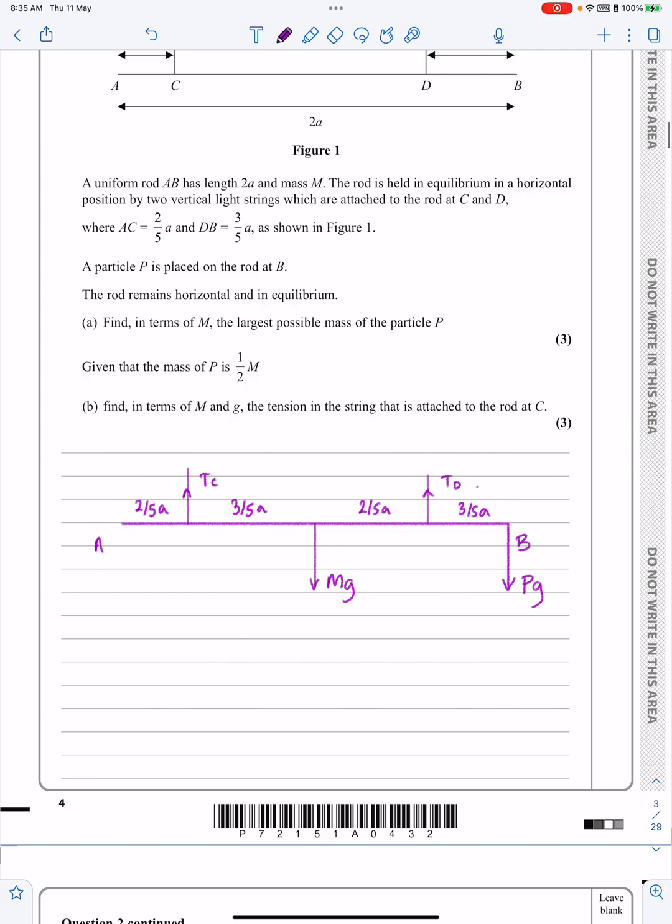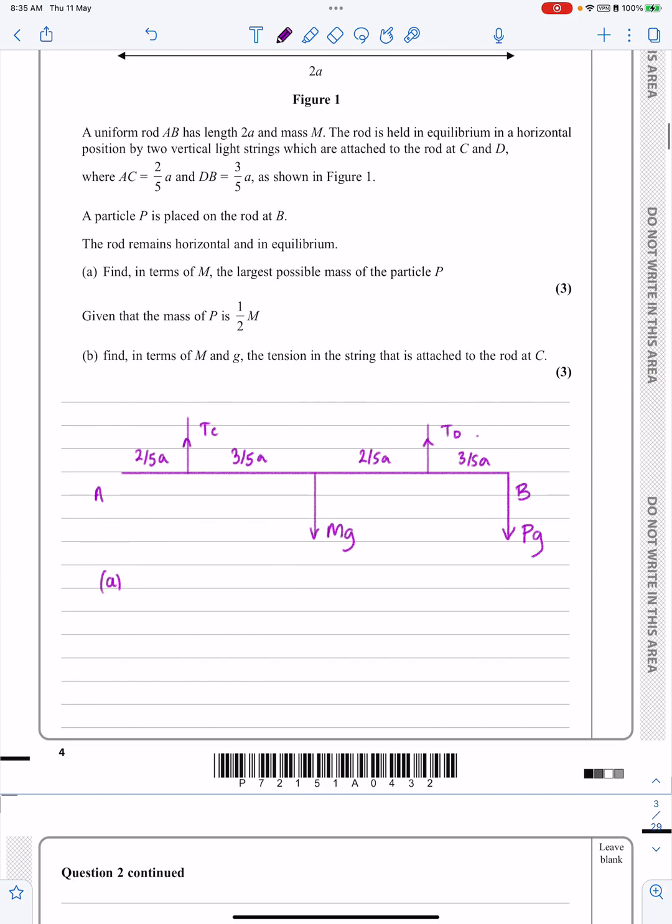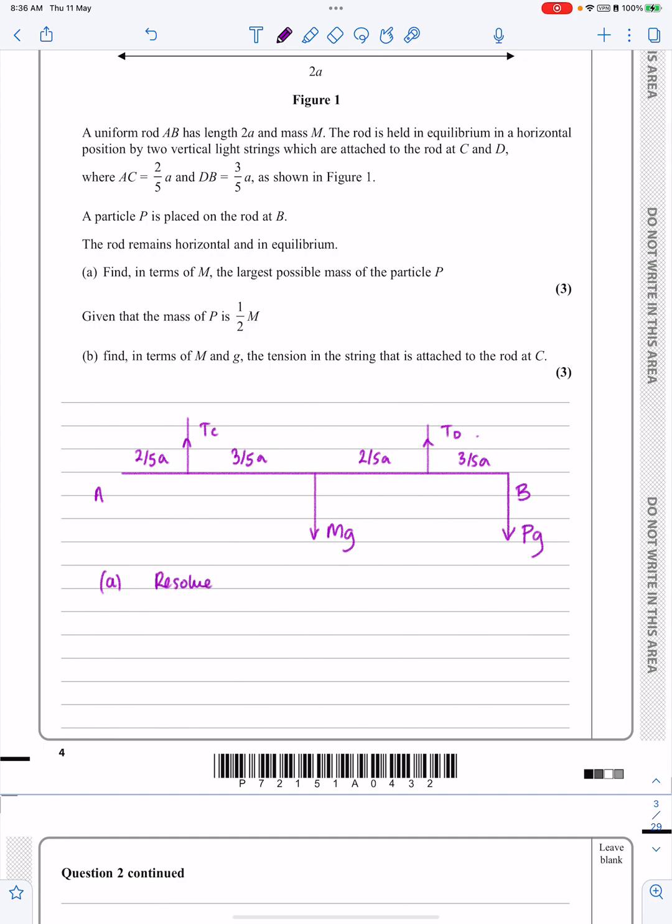Okay, so even when I do it, I can do it and resolve vertically without putting that information on. So to start off with, I just resolve vertically. And I say, okay, Tc plus Td is equal to Mg plus Pg, the forces upwards are equal to the forces downwards. And it was at this point I had too many variables. And then I suddenly realized, if P is as large as possible, then Tc can be considered to be equal to zero. That means that now I've got Td is just Mg plus Pg, that's going to help when I do my next part.